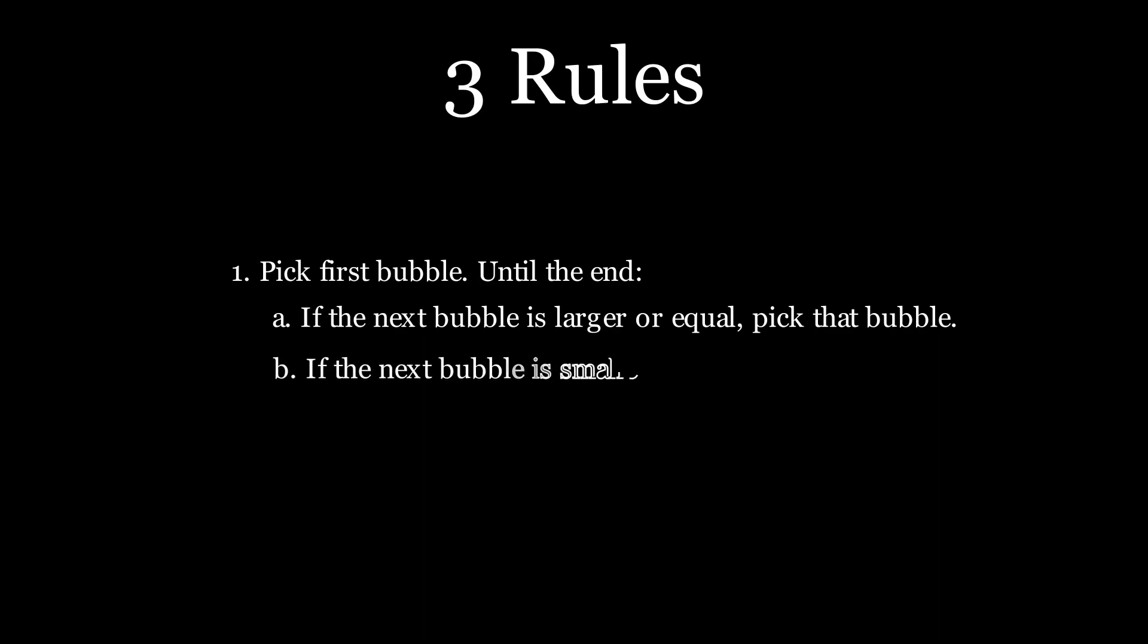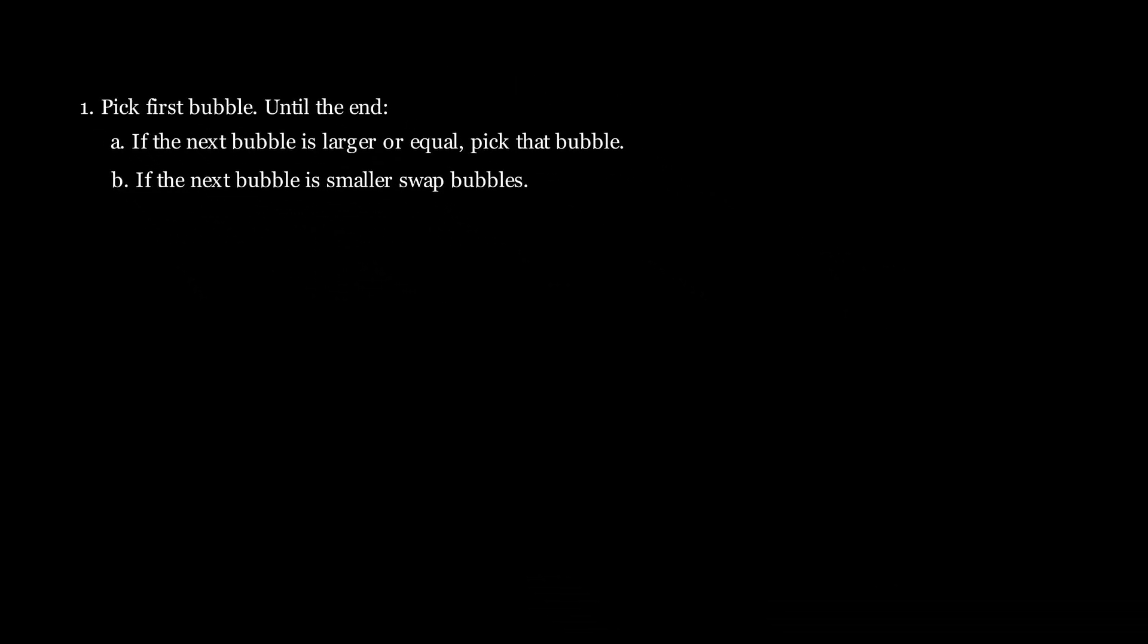Otherwise, if the next bubble is smaller, we pass that bubble because we are faster and we should get to the top first. So, we swap places with that bubble. Now that we have our three rules, let's see how we can apply them to a list of unsorted numbers.